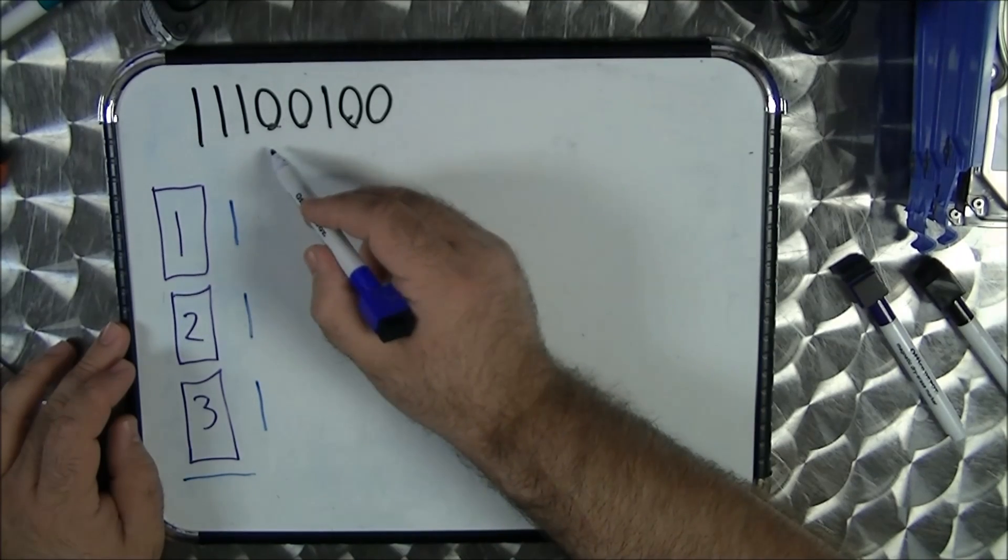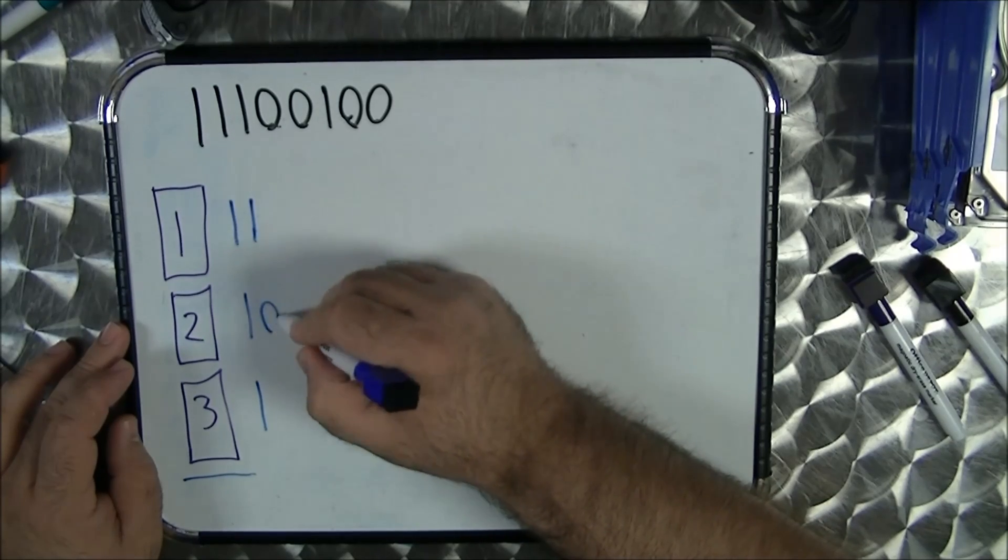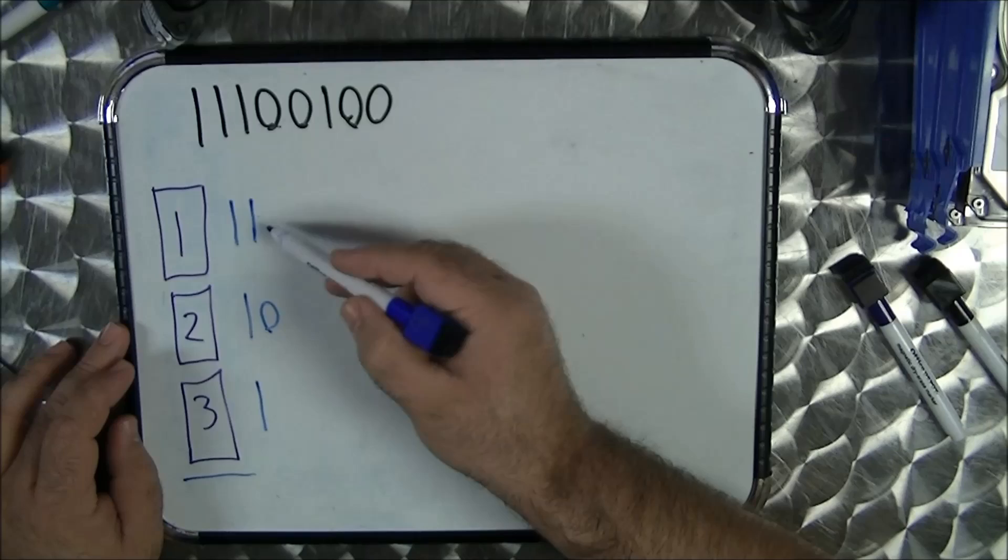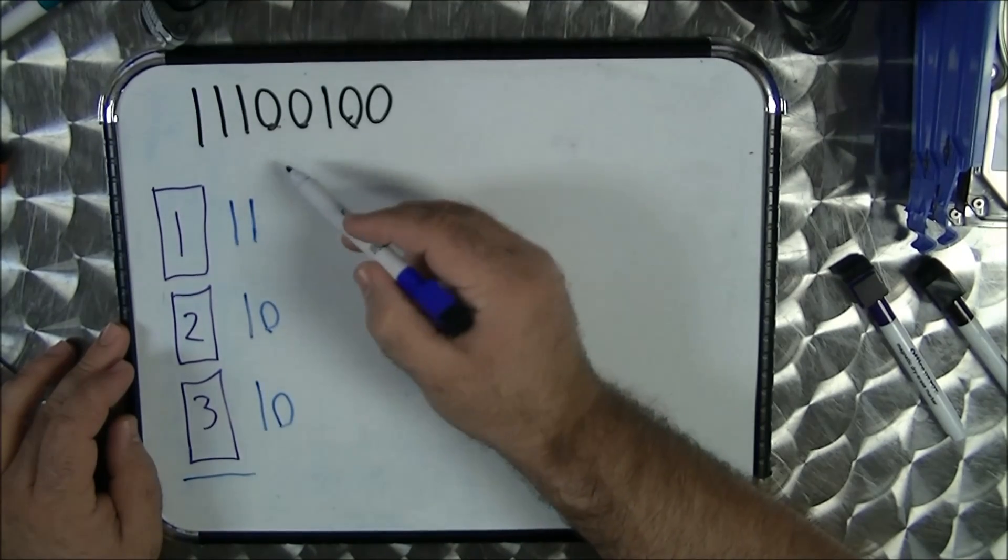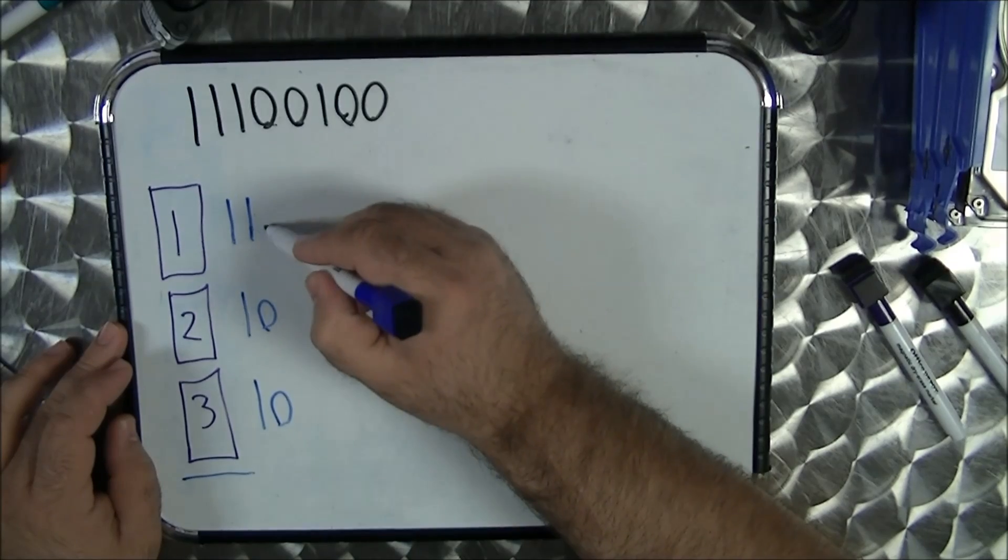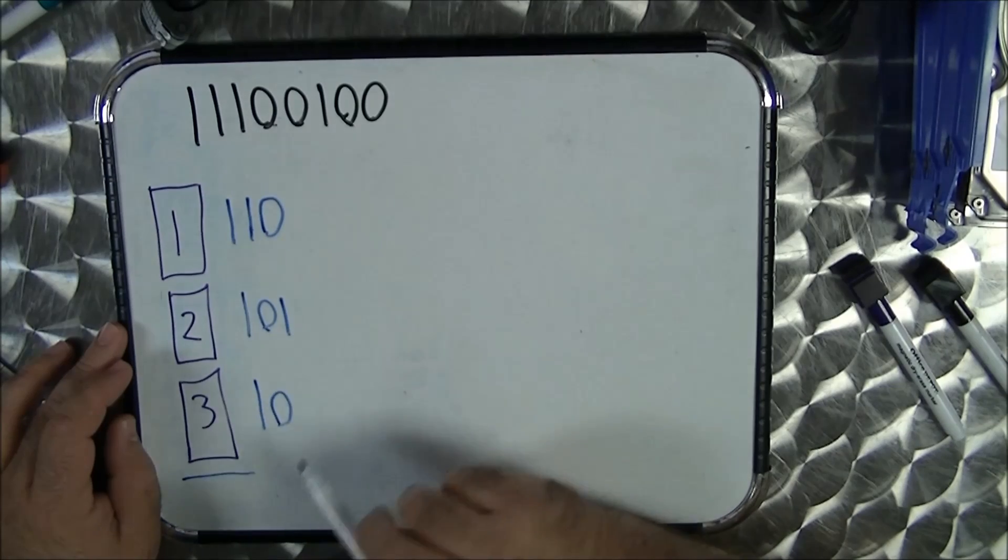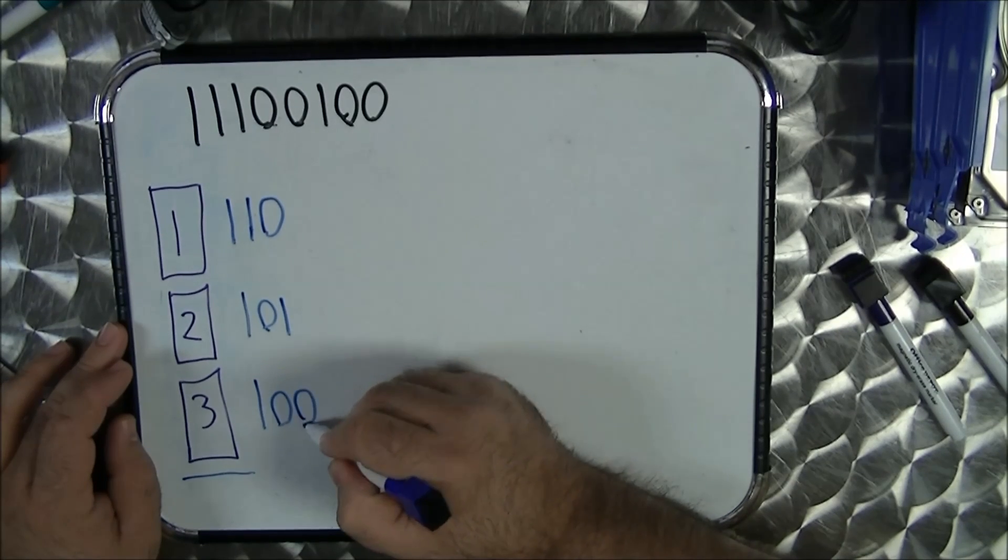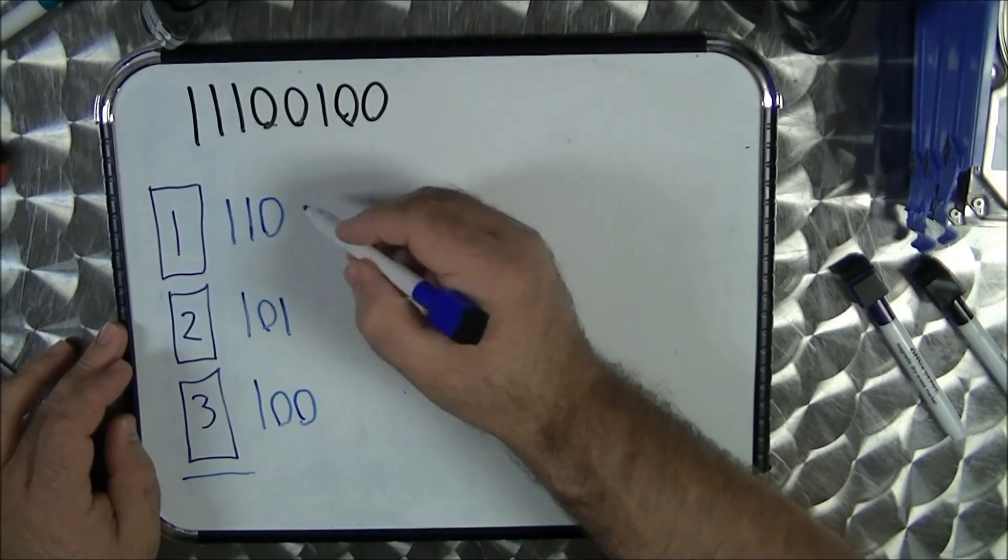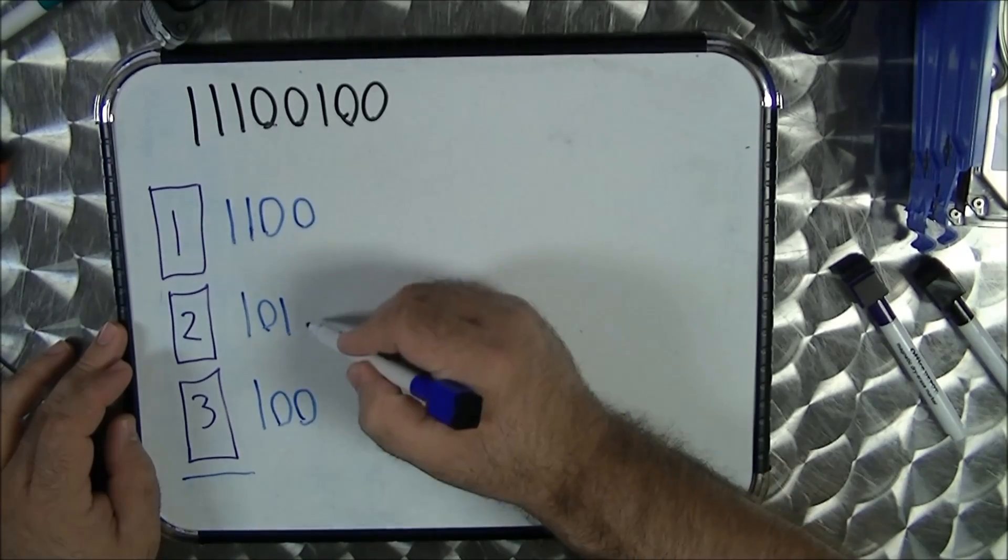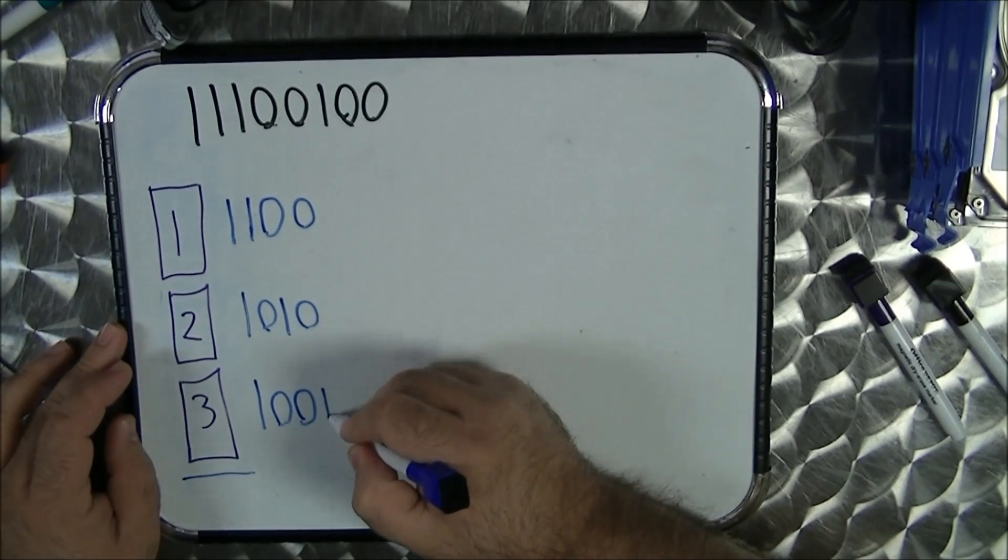The next two bits: one and a zero. Parity, do these two match? No. Next: zero, one, zero, one. Do these two match? No. Your parity is zero. And then the last one: zero, zero, zero, zero. Do these two match? Yes, your parity is one.